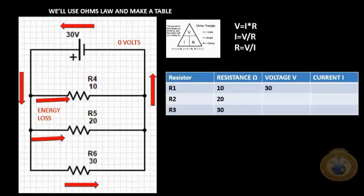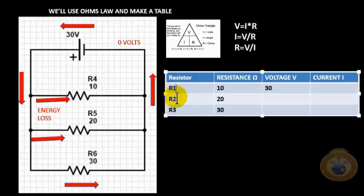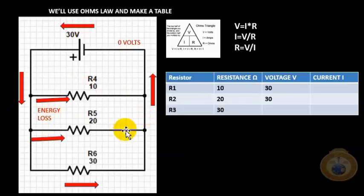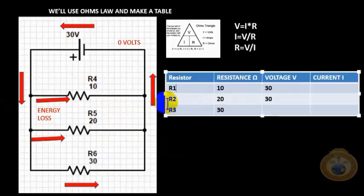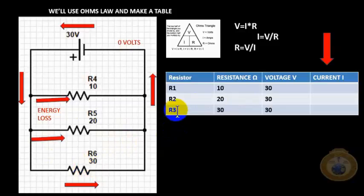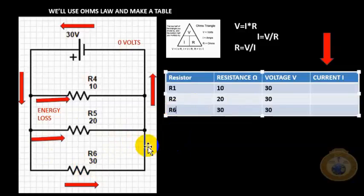Now we're calculating our voltage. 30 volts across resistor four, 30 volts across resistor five, and 30 volts across resistor six, the 30 ohm resistor. So that will not change. The voltage flowing across each is 30 volts.